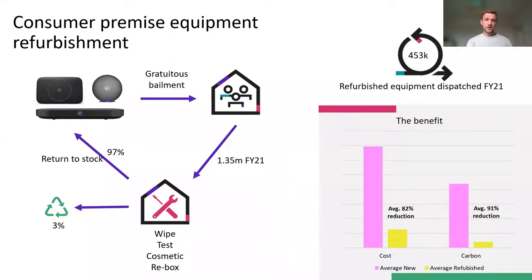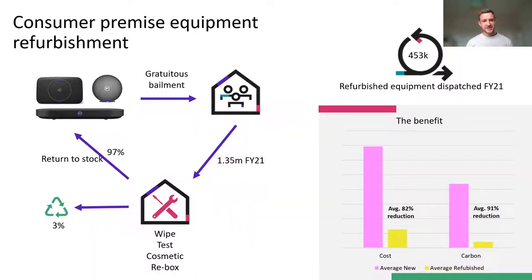BT worked with an organization to analyze the carbon benefit: on average across product categories, there's a 91% carbon saving from refurbishment versus buying new, because most of the footprint is in manufacturing. There's also an 82% cost saving versus buying new. Last year, around 450,000 refurbished devices went out to customers — you can't tell the difference, they look exactly the same. This avoided BT buying nearly half a million new devices, saving significant upstream Scope 3 emissions.